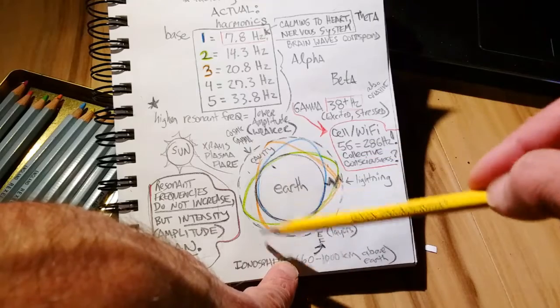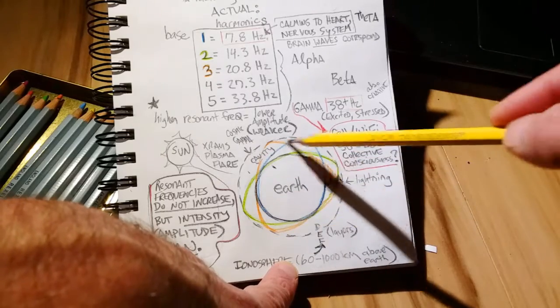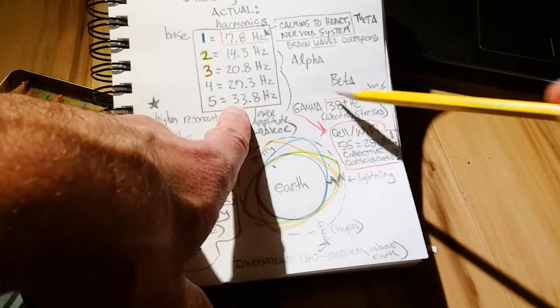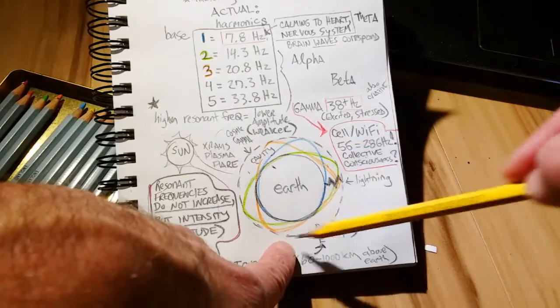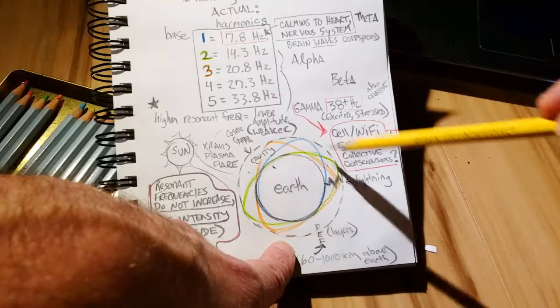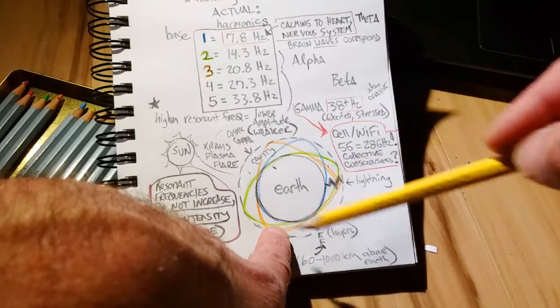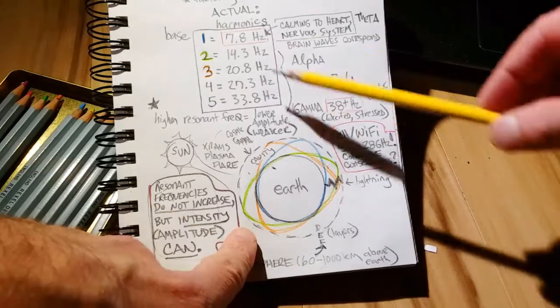4 and 5 would be touching 4 and 5 times around the ionosphere. And if we get up into gamma and above, that's going to be a higher frequency, bouncing 6, 7, 10 times off the ionosphere as we go further up in frequency.